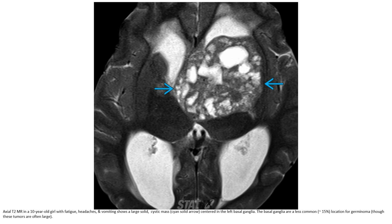T2 MRI in a 10-year-old girl with fatigue, headache, and vomiting shows a large solid cystic mass centered in the left basal ganglia. The basal ganglia are a less common location for germinoma, accounting for around 15 percent of cases.